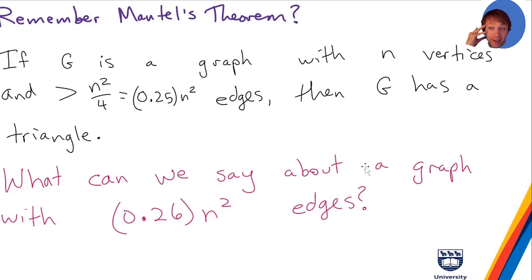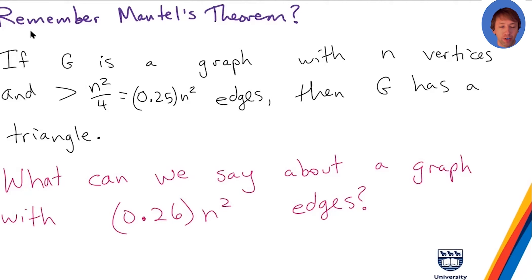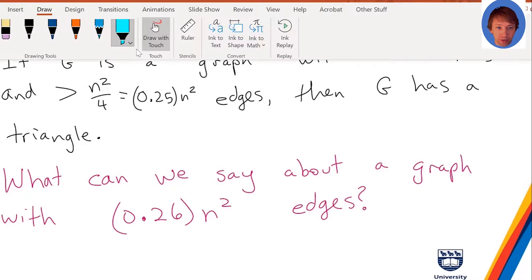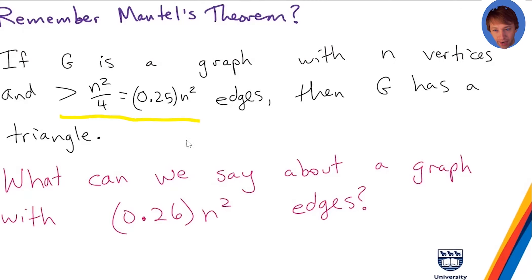Remember Mantle's theorem. If you have a graph with n vertices and the graph has more than n squared over 4 edges, then it has a triangle. Or in the contrapositive: if G has no triangles, then the number of edges is at most n squared over 4. So 1 over 4 is 0.25, or 25% of n squared.